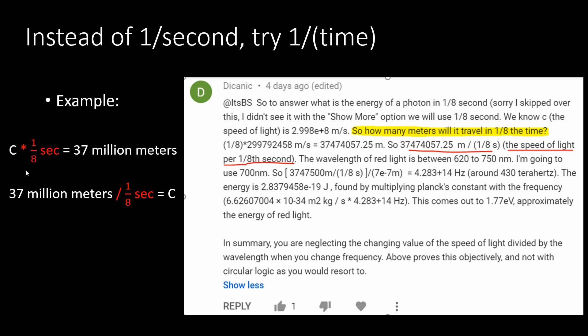Now hang on, what this person is saying is to multiply in 1/8th of a second and then turn around and divide that 1/8th of a second right back out. So I'm thinking you're proving my point because you're starting with the speed of light, and then all you're doing is converting it back to the speed of light.